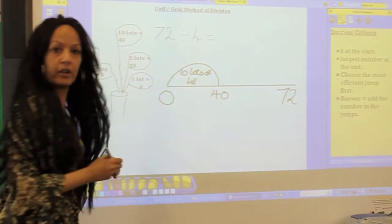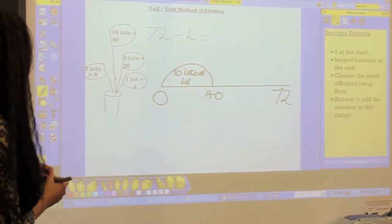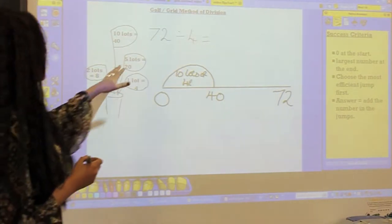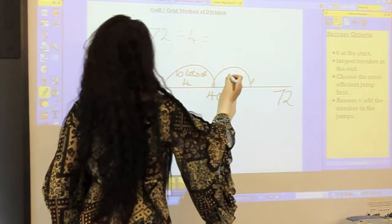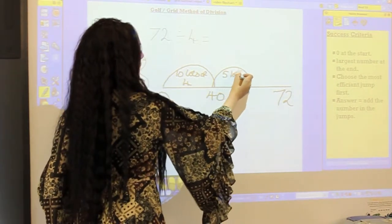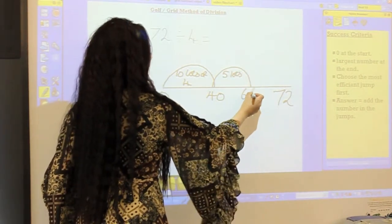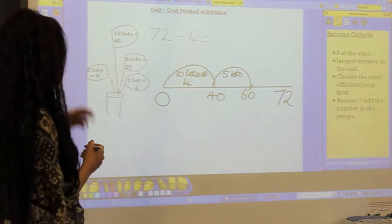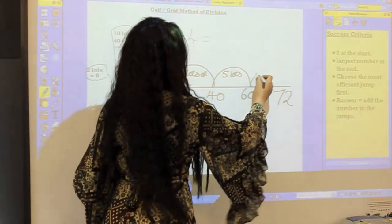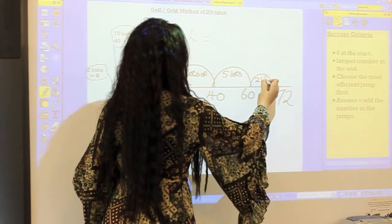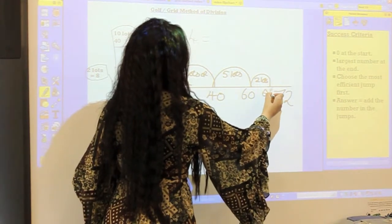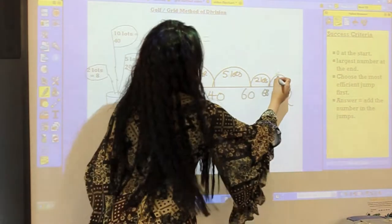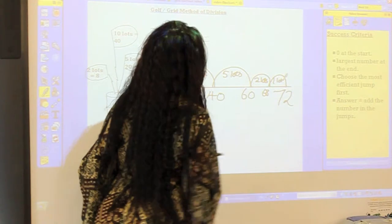Then you decide on the next multiple that you'll jump up. We pick five lots of four, which would take us to 60. And then you continue. So I'm going to jump up two lots, which would take me to 68 and leave me with a jump of four, which is just one lot.